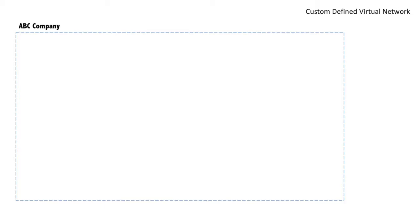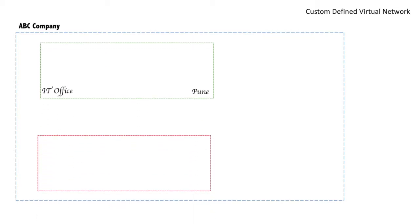A VPC belongs to one particular region; if you need one in another region, you create a separate VPC. Let's say in South Asia, ABC Company has two locations — one in Pune and one in Mumbai. In Pune, it's an IT office, and in Mumbai, it's a corporate office. We will relate this to VPC. Pune can represent IT-related members who can access the whole world.